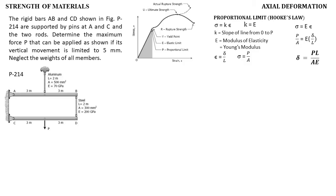Let's now start to solve this tricky problem. The rigid bars AB and CD shown in figure 214 are supported by pins at A and C and the two rods, the aluminum rod and the steel rods. Determine the maximum P that can be applied as shown if its vertical movement is limited to 5mm. Neglect the weight of all members.